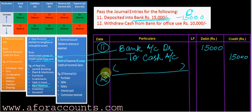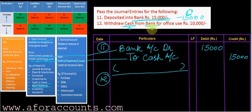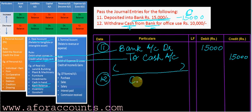Entry 12: withdraw cash from bank for office use — rupees 10,000. This is the reverse of the above entry. Cash balance is increasing, so debit cash. Bank balance is decreasing — note that both cash and bank are assets. Asset when increases has a debit balance, asset when decreases has a credit balance. Cash is coming in from bank, so cash account debit.